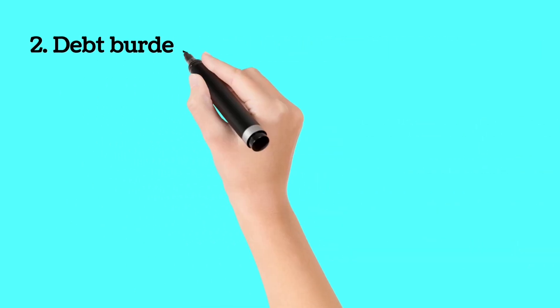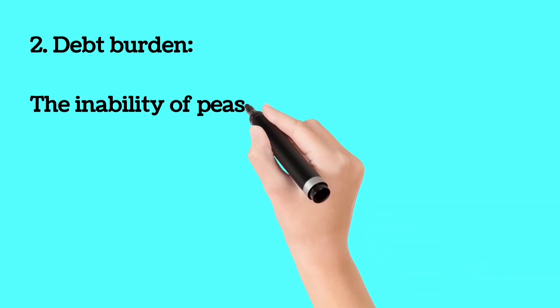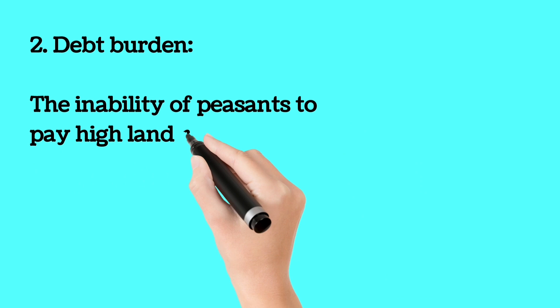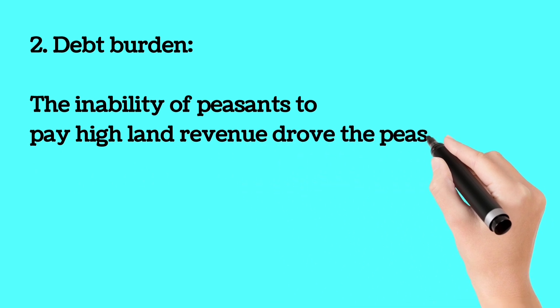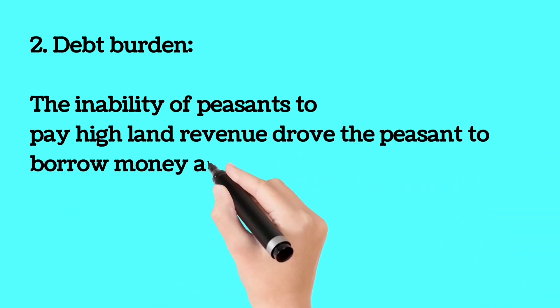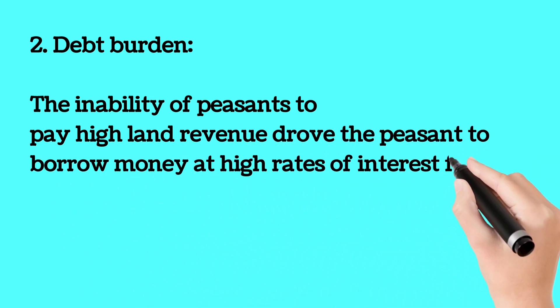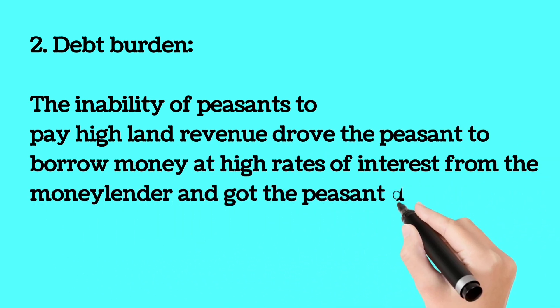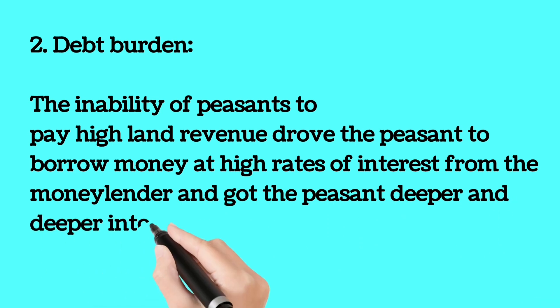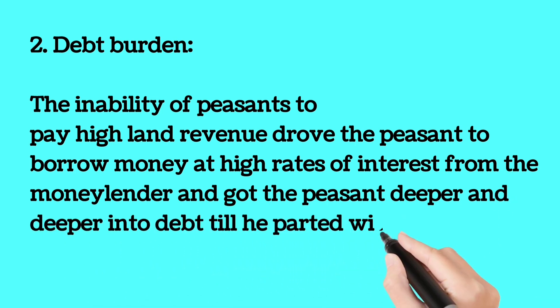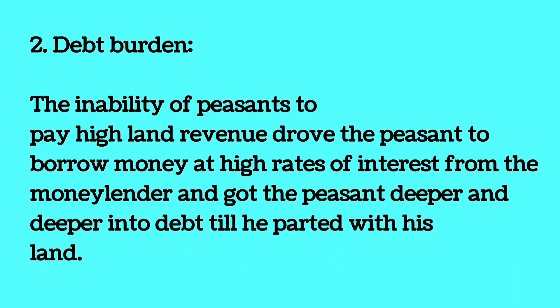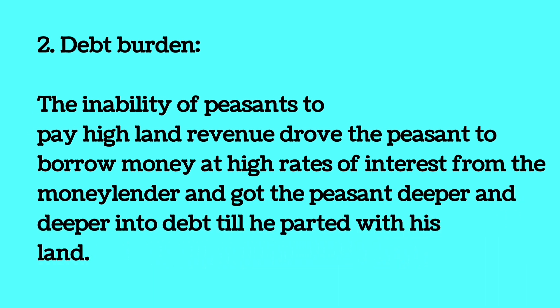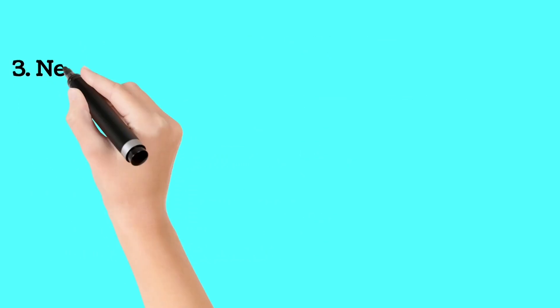Two: Debt burden. The inability of peasants to pay high land revenue drove them to borrow money at high rates of interest from moneylenders, pushing them deeper and deeper into debt until they parted with their land.